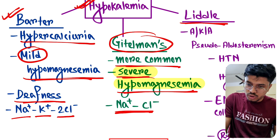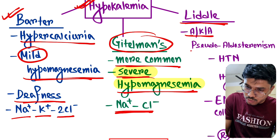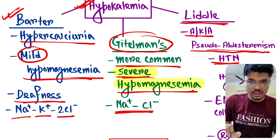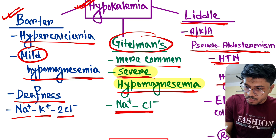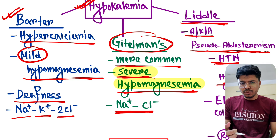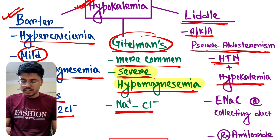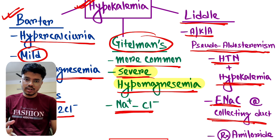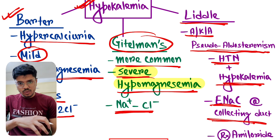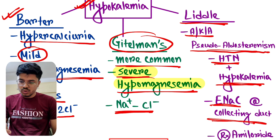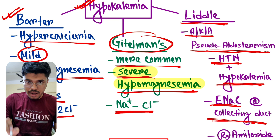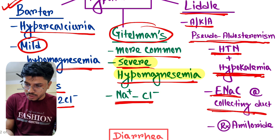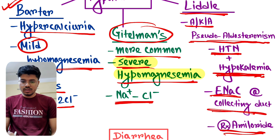Liddle syndrome is also called pseudoaldosteronism, because there is hypertension and hypokalemia. The associated channel is ENaC in the collecting duct. Due to over-activation of ENaC, there is more water entering, causing hypertension and hypokalemia. The treatment of Liddle syndrome is amiloride.